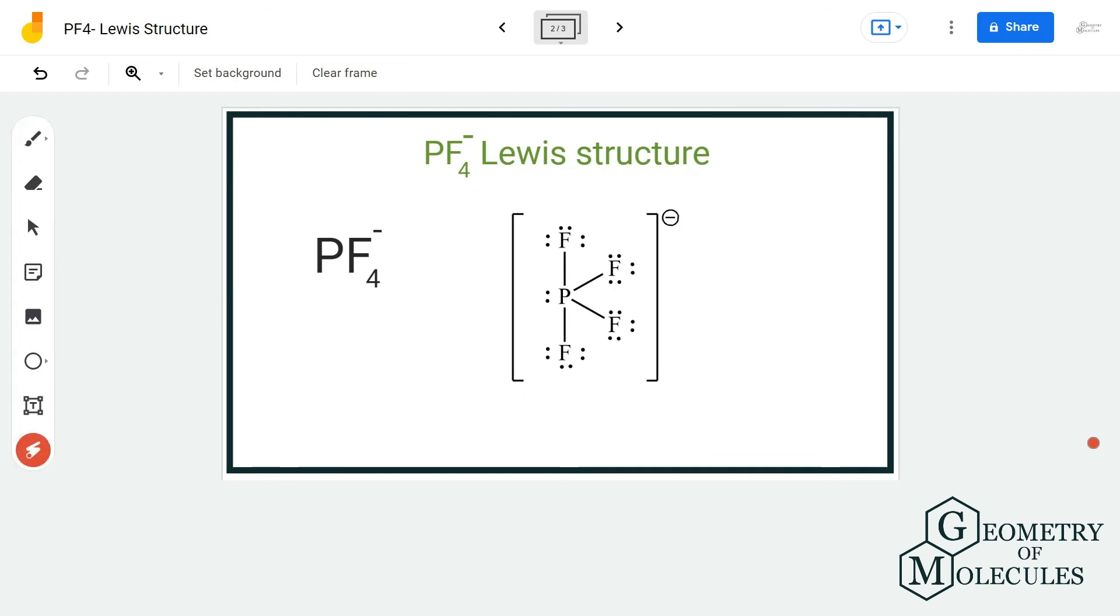Because phosphorus is an exception to the octet rule and it can expand its octet and have more than eight valence electrons in its outer shell. And hence a phosphorus atom will have ten valence electrons instead of eight for this ion. And now this is a Lewis structure of PF4 minus ion.